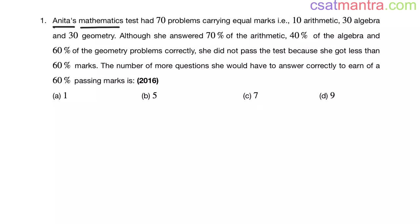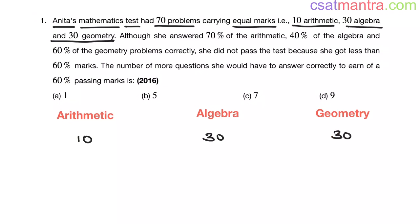Anita's mathematics test had 70 problems carrying equal marks, that is 10 arithmetic, 30 algebra and 30 geometry. So there are 10 questions in arithmetic, 30 questions in algebra, 30 questions in geometry.